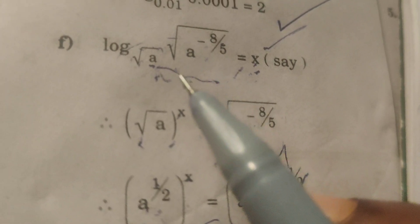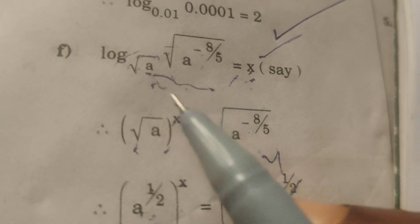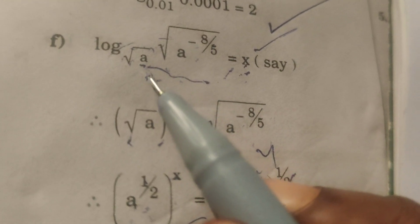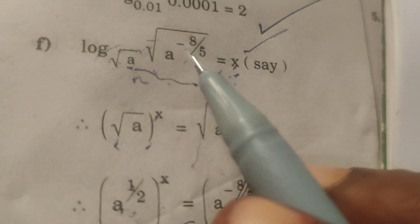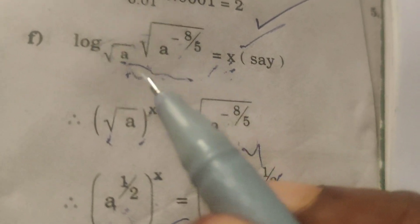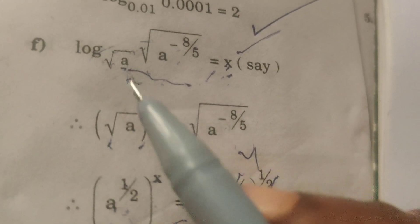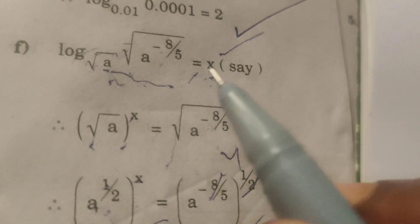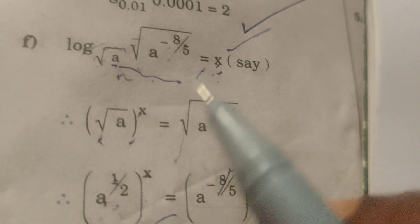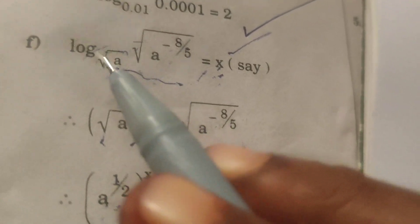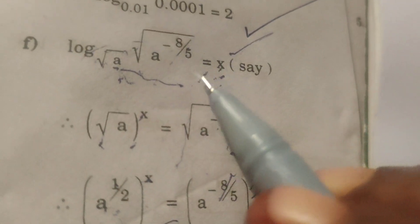Today we are going to explore this logarithmic function problem: log of root a power minus 8 by 5, base root a. Consider first of all this is x, and this is the logarithmic form at present.